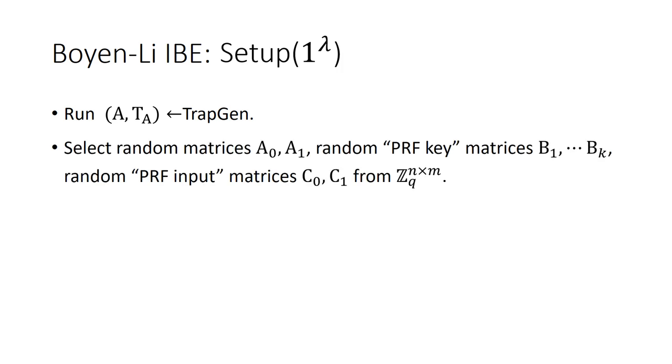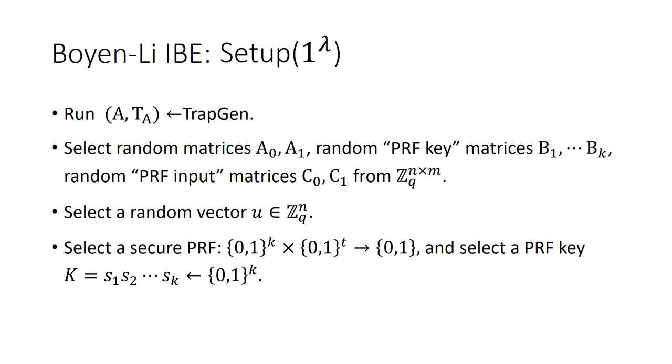First, we recall the standard ABB algorithm. It first runs a trapdoor generation algorithm to get matrix A and its trapdoor T_A, and then selects random matrices A0, A1, random PRF key matrices B1 to BK, random PRF input matrices C0, C1. Next, select random vector U. Furthermore, select a cyclic PRF, and select a PRF key from k-bit. Finally, output a master public key and a master secret key.